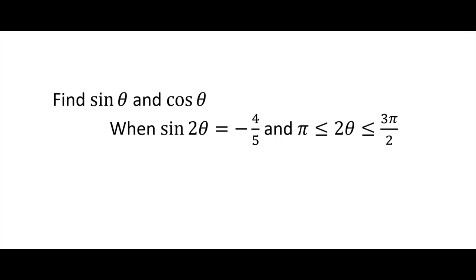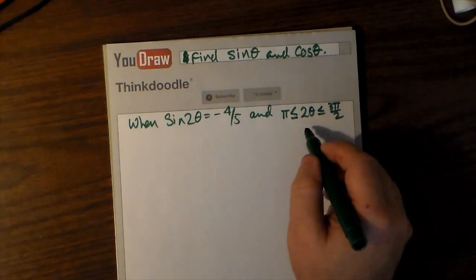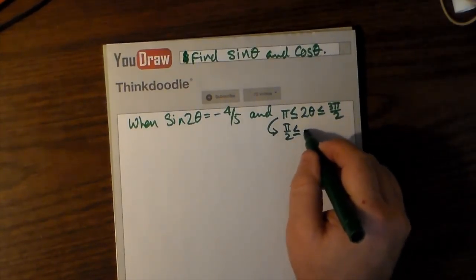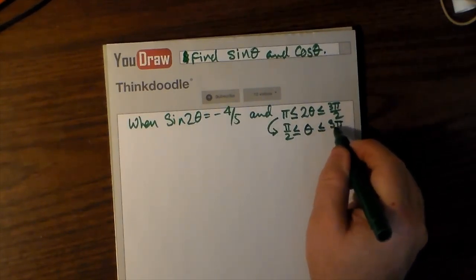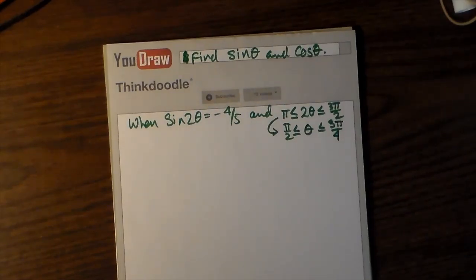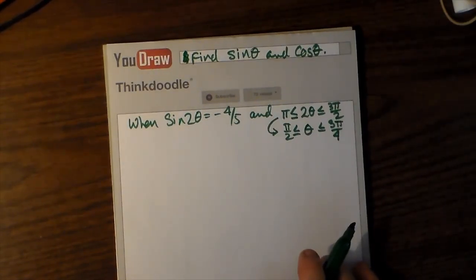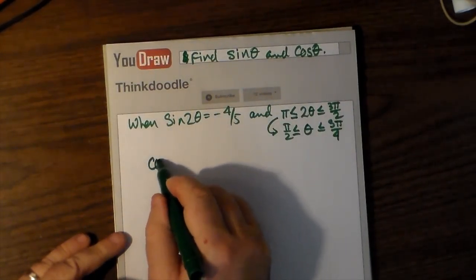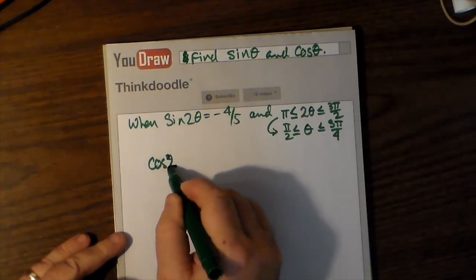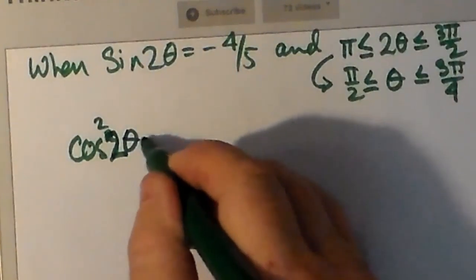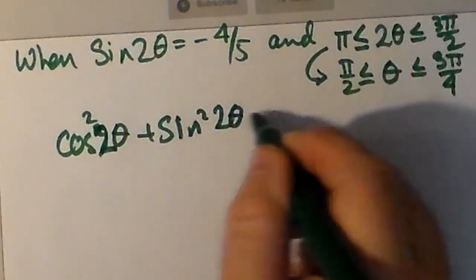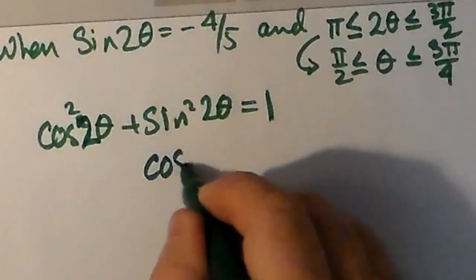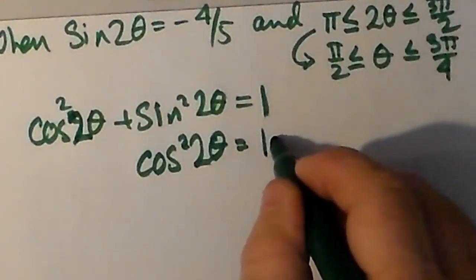Here's question 3. What's different this time is we're finding sine and cosine given sin 2θ or cos 2θ — so given a double angle trig function, we find the original sine and cosine. We're told that sin 2θ is negative 4/5, and 2θ is somewhere between π and 3π/2, meaning it's in quadrant 3. If we divide the inequality by 2, we get π/2 ≤ θ ≤ 3π/4, which means θ is in quadrant 2.